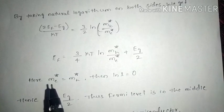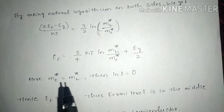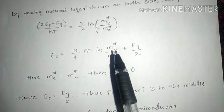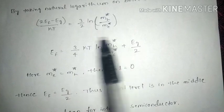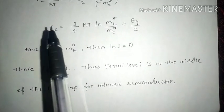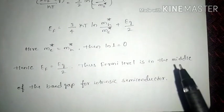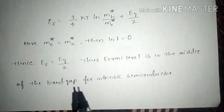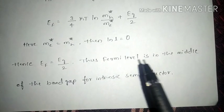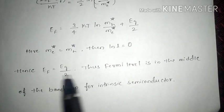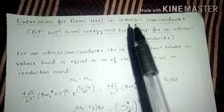Since we consider the effective mass of the electron and the effective mass of the hole to be equal, their ratio is 1, and ln(1) equals 0. So this entire term becomes 0. Hence, EF equals EG / 2. This means the Fermi level is in the middle of the band gap for an intrinsic semiconductor. If you consider an intrinsic semiconductor, its Fermi level will always be in the middle of the energy gap. This is the expression for Fermi level in an intrinsic semiconductor. Thank you.